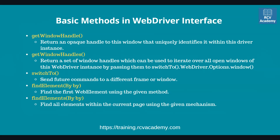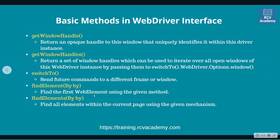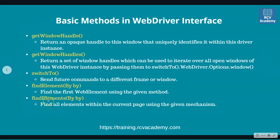We'll also learn about findElements. The difference between findElement and findElements is that findElement finds one particular element, whereas findElements will find all elements that match a particular XPath or locator. If the locator returns similar web elements of that type, it will return all of them into a list.